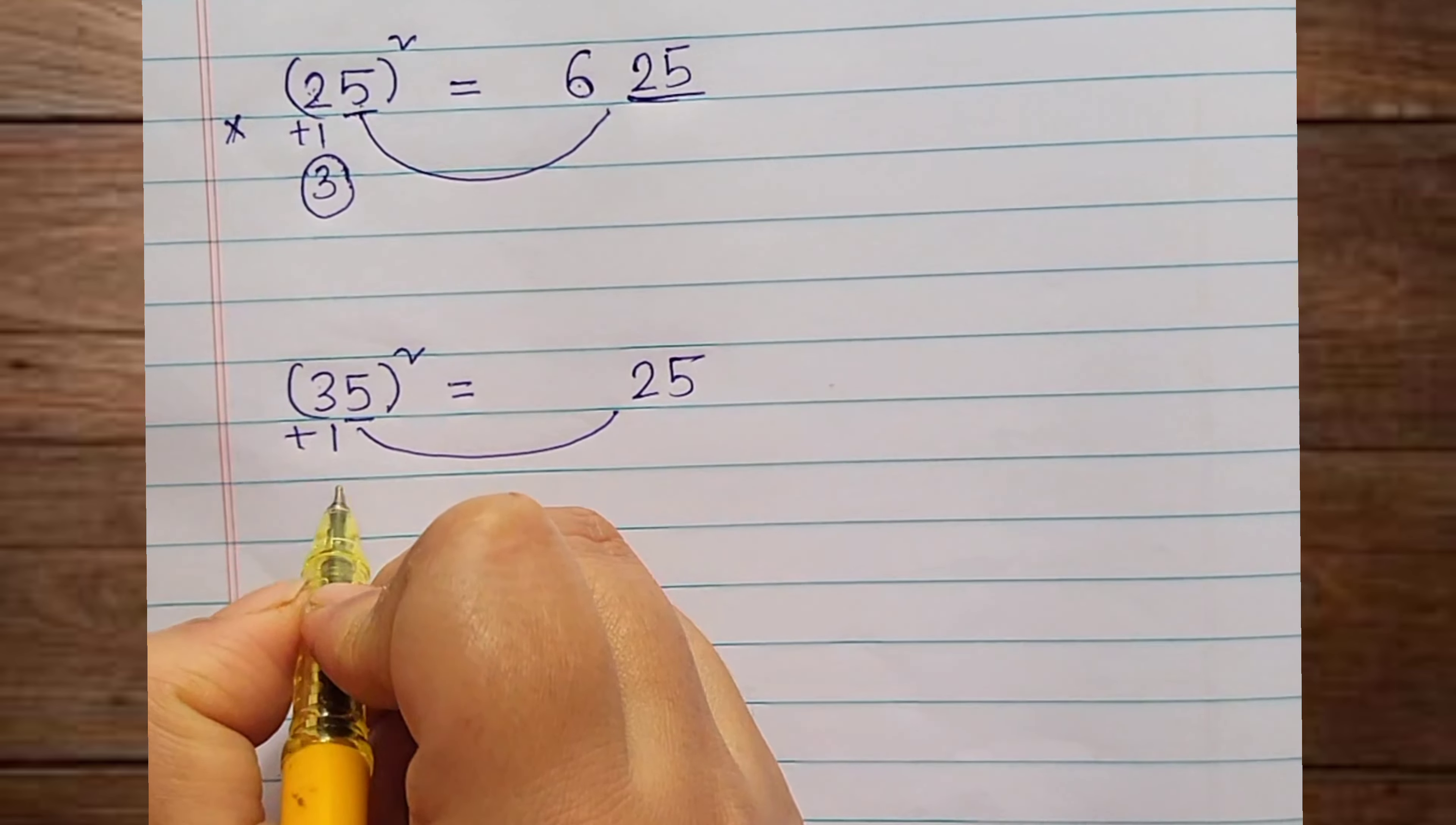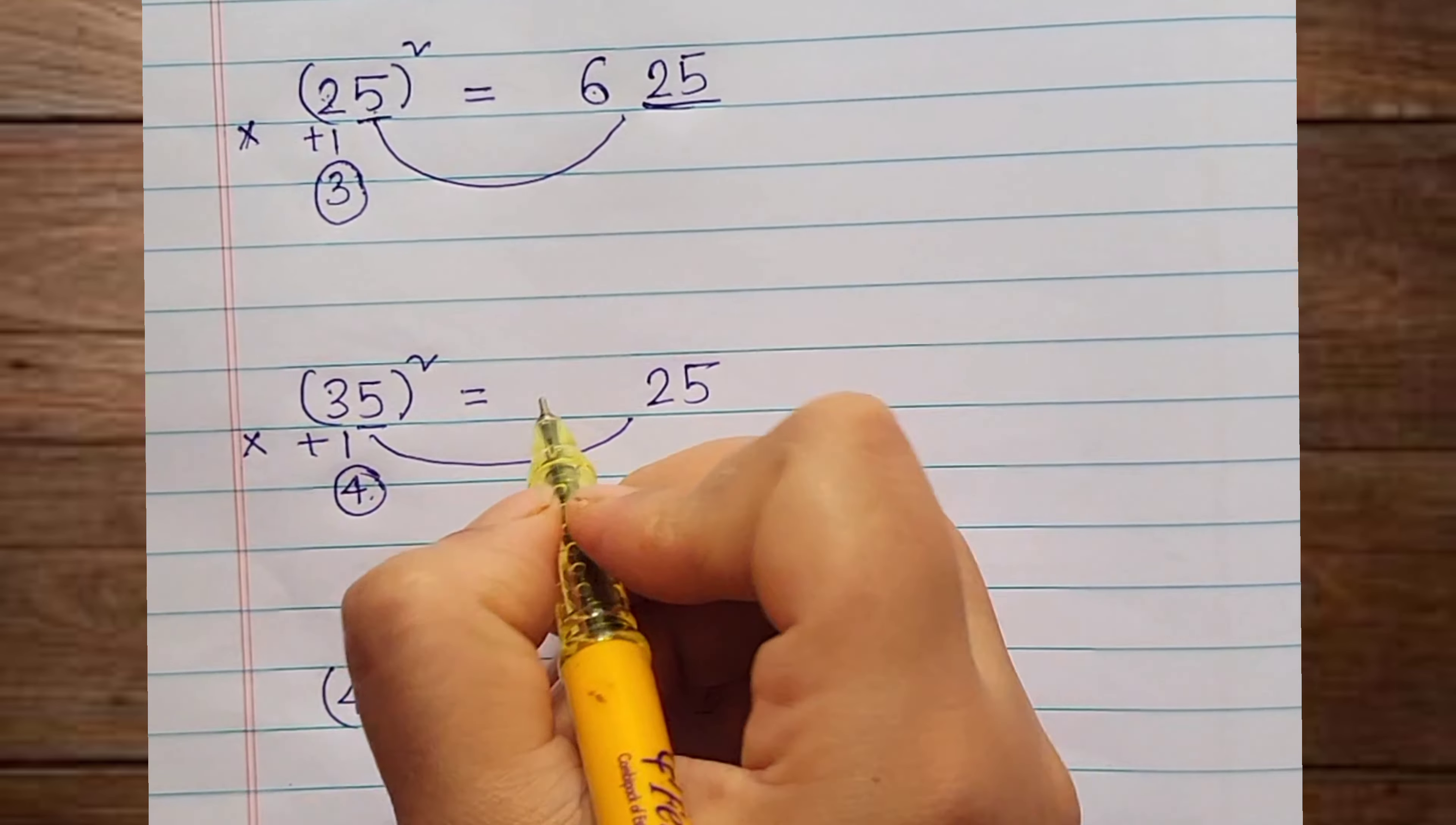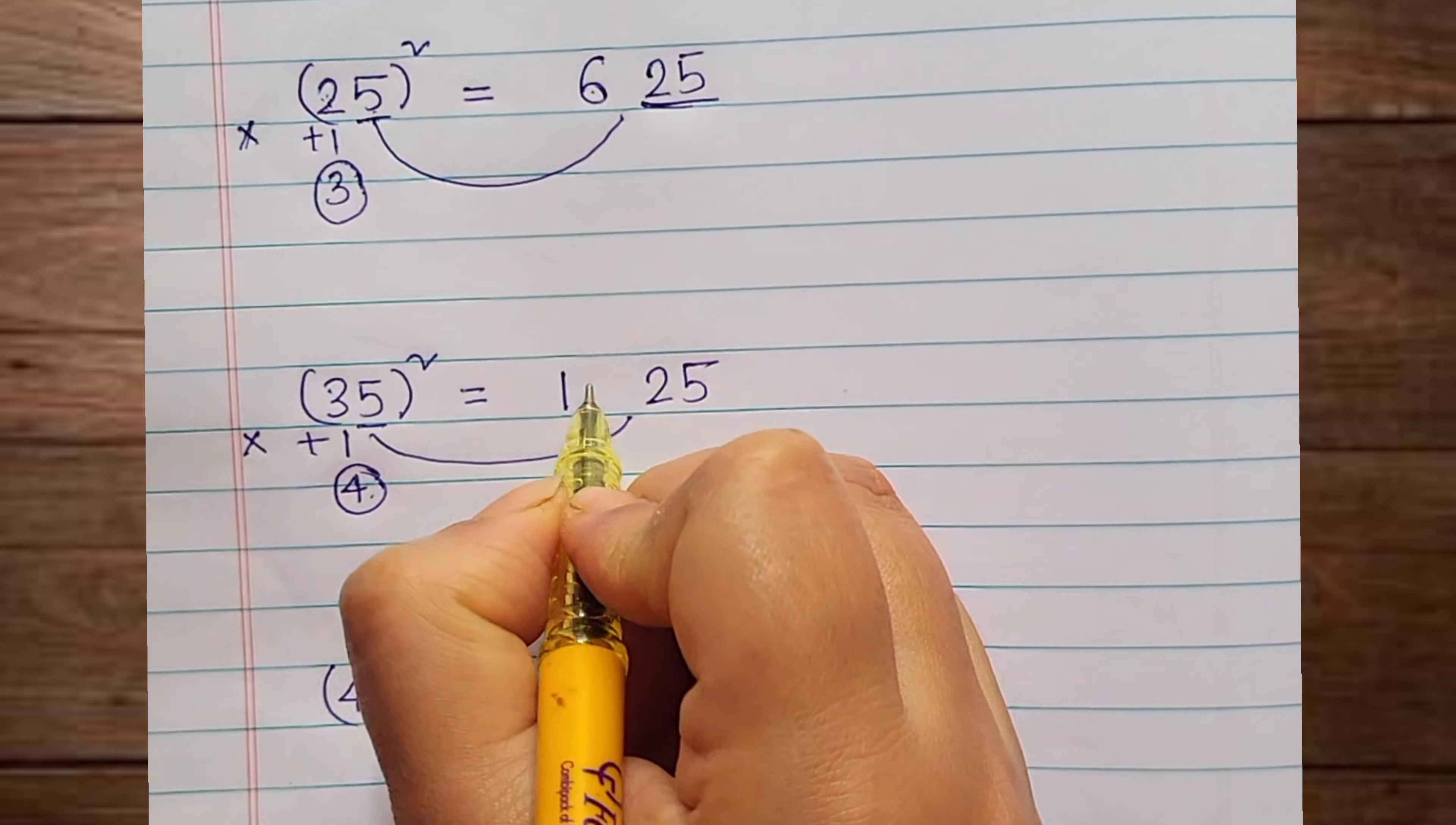Again, in the next one, 5 we can write here 25. 3 plus 1 which is 4, then 3 into 4 we can multiply. It is 12. Similar,